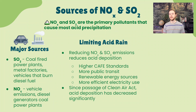Anything that limits the amount of NOx and SO2 emissions is going to be effective at limiting acid rain, because those are the primary ingredients. We could raise CAFE standards so vehicles travel further on a single tank of gas, emitting fewer pollutants especially NOx. More public transit reduces NOx emissions. Using more renewable energy takes coal-fired power plants offline, reducing SO2, and more efficient electricity usage also reduces the amount of coal-fired power we need to generate.